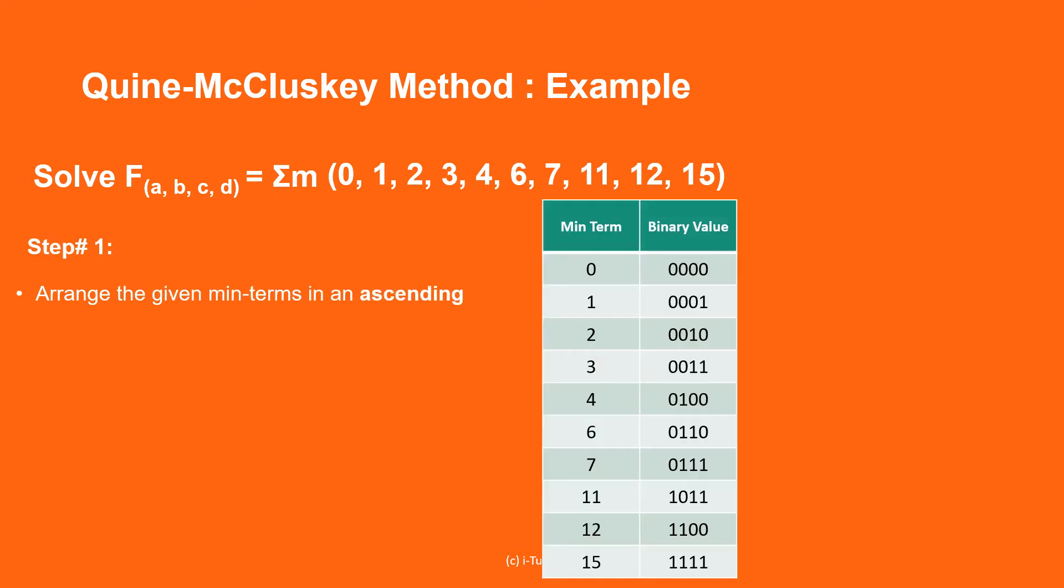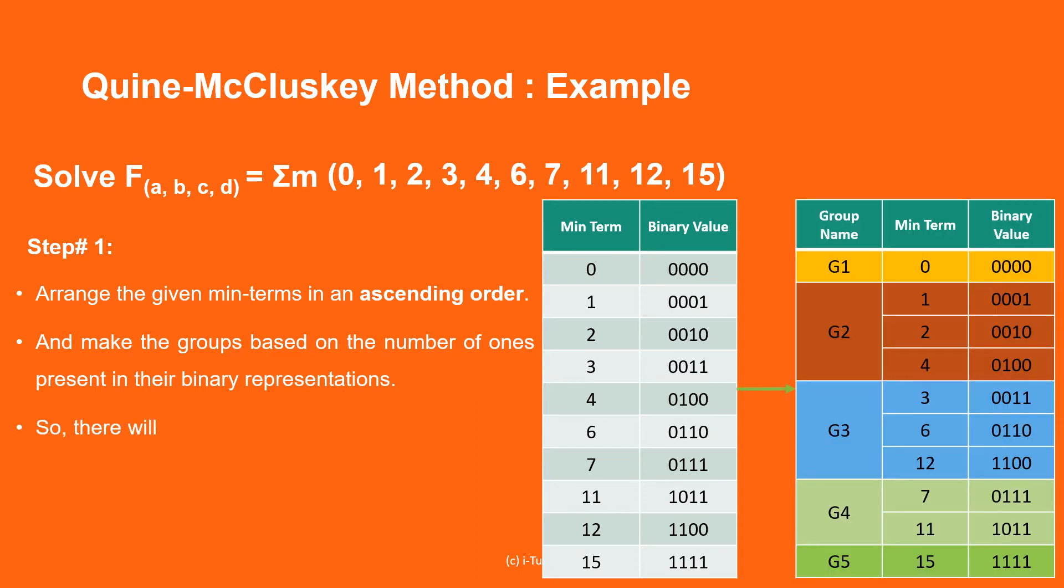So there will be at most n plus one groups if there are n boolean variables in a boolean function or n bits in the binary equivalent of minterms.